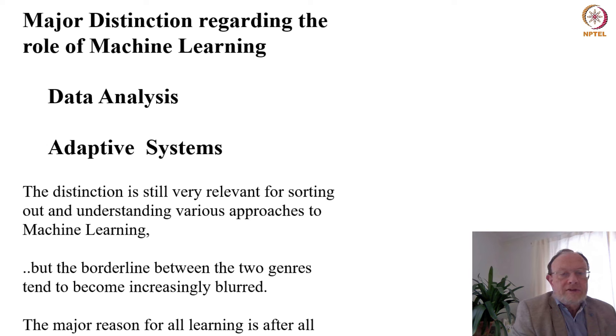The second context is what is termed adaptive systems. As you know, we are surrounded by more and more autonomous systems of various kinds that do us services, and in general these autonomous systems need to be adaptive. Of course, machine learning has a growing role here.